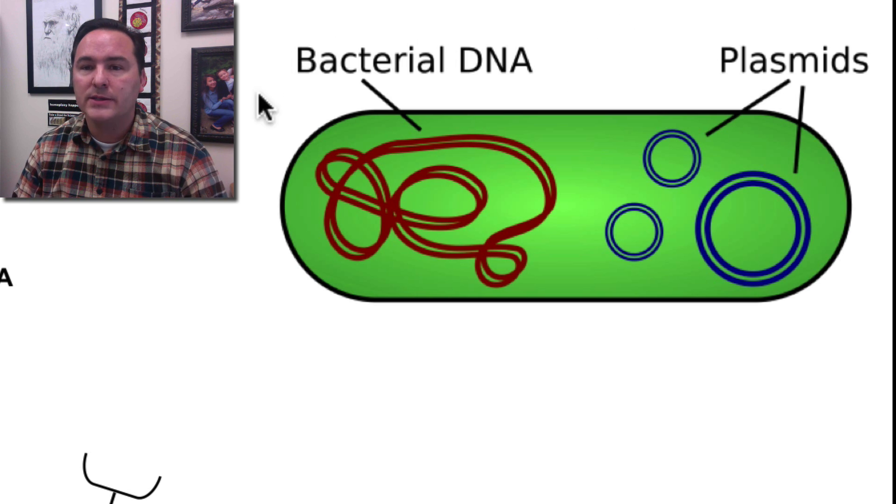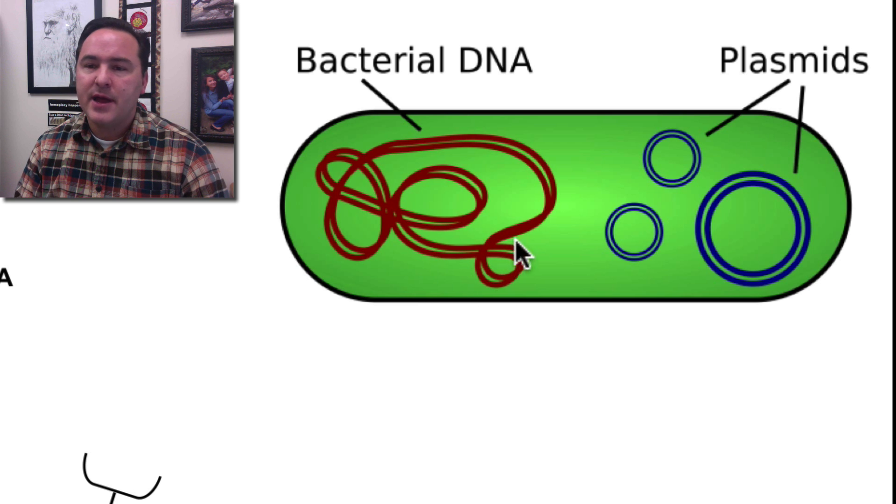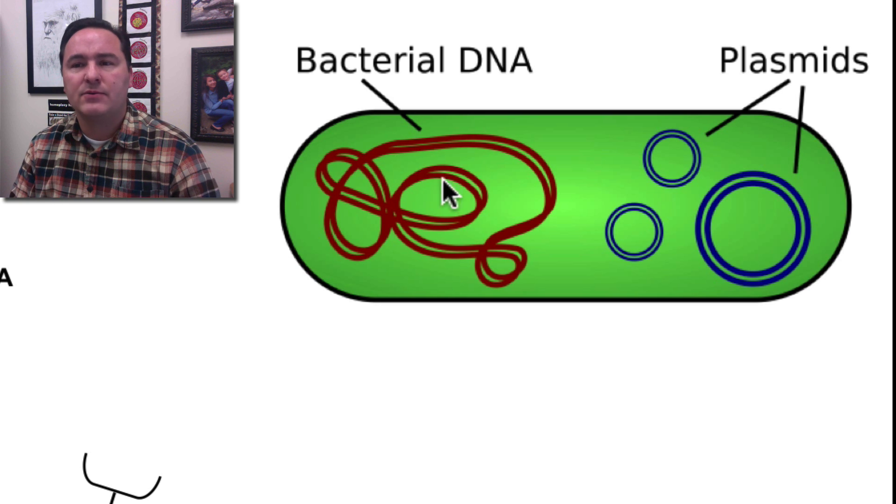The workhorse of biotechnology are bacteria. Now, bacteria have a circular piece of DNA. That's what we call their chromosome. But in addition to this, and we haven't really mentioned this,